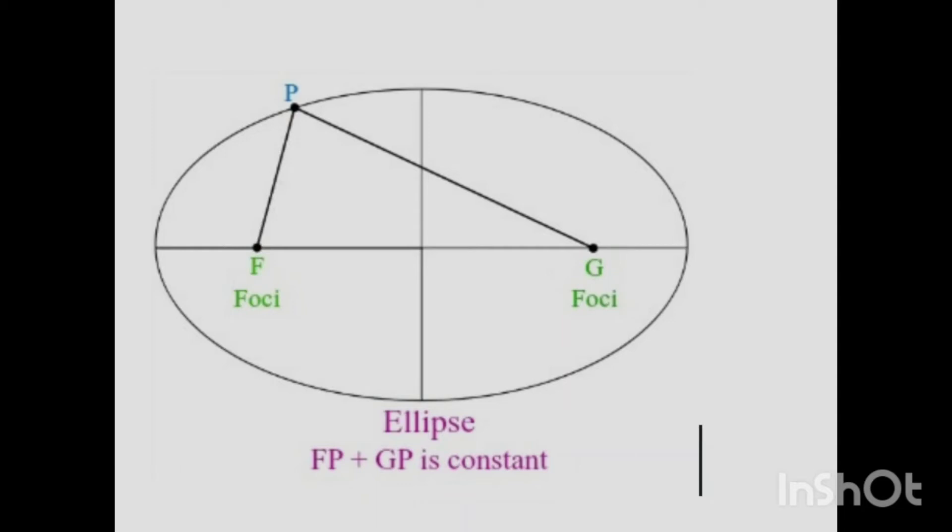Or you may shift it to another point and the distances may be 8 and 4, so FP 8 and GP 4. Again, the sum of the distances would still be 12. So the idea is that from the foci to anywhere on the circumference, the sum of those distances will always be the same.